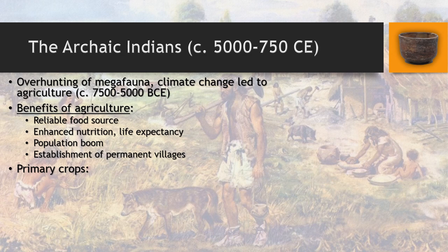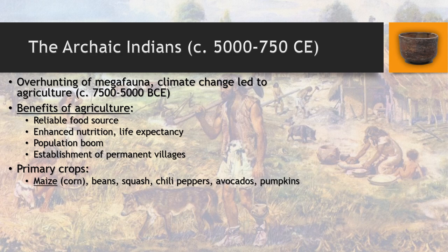The primary crops grown during this time period are ones we see all the way through to when Europeans first arrived in the Americas. Maize — corn — is the one you probably hear about most. Other traditional crops include different species of beans, squash, chili peppers, pumpkins, and avocados. Interestingly, woolly mammoths may have actually saved avocados from extinction — mammoth remains show avocado stones preserved in their stomachs, meaning the animals would eat the fruit, migrate, and deposit the seeds elsewhere. So if you like guacamole, you have woolly mammoths to thank.